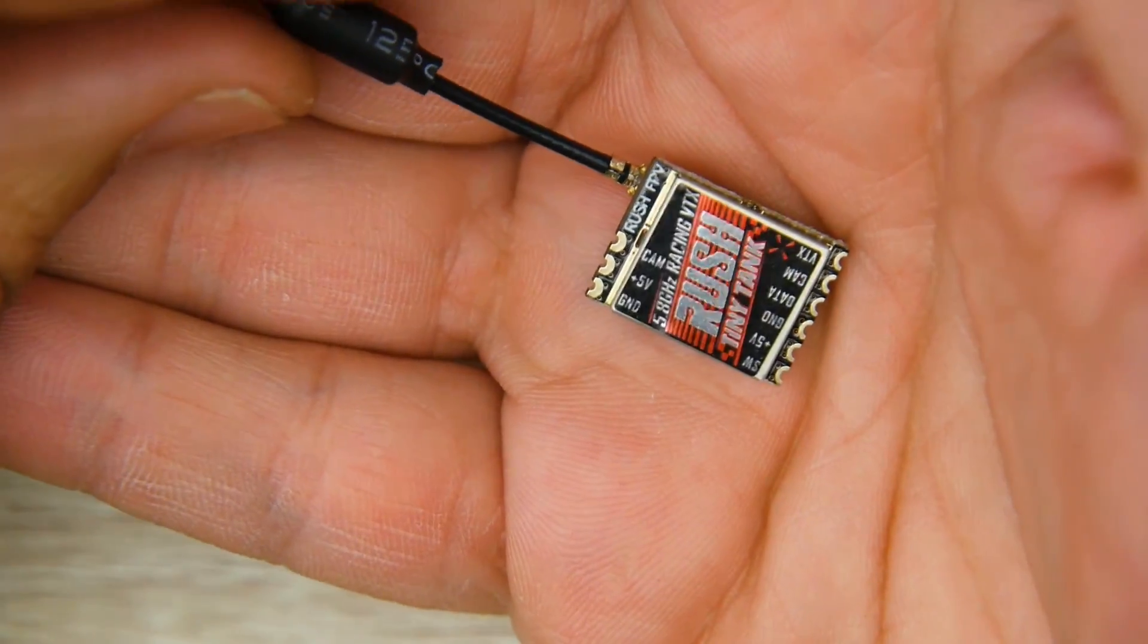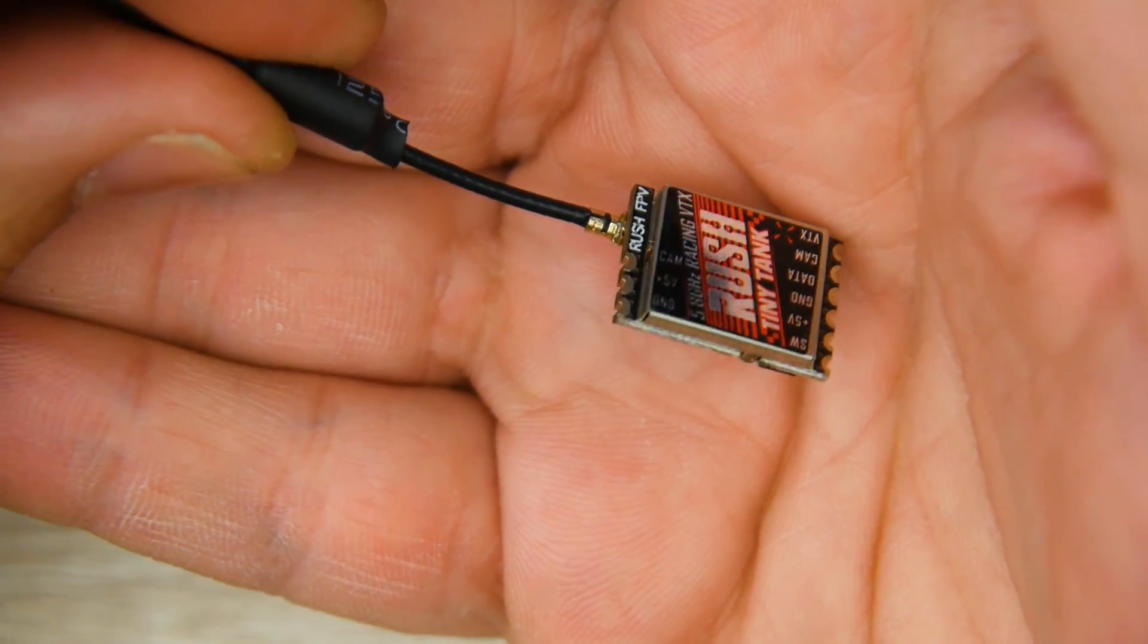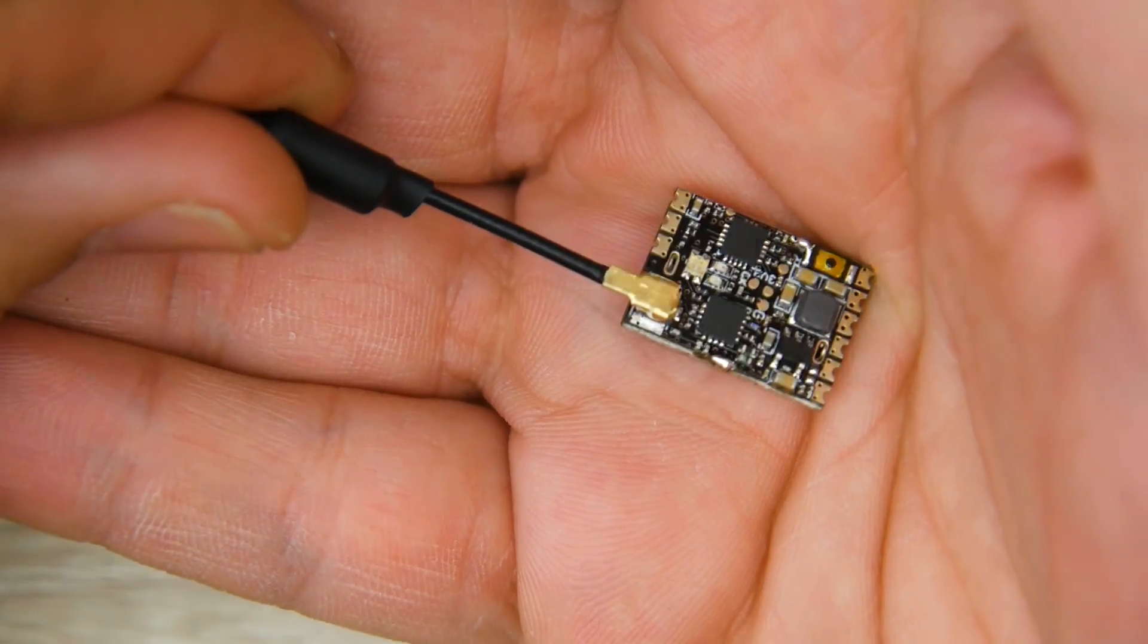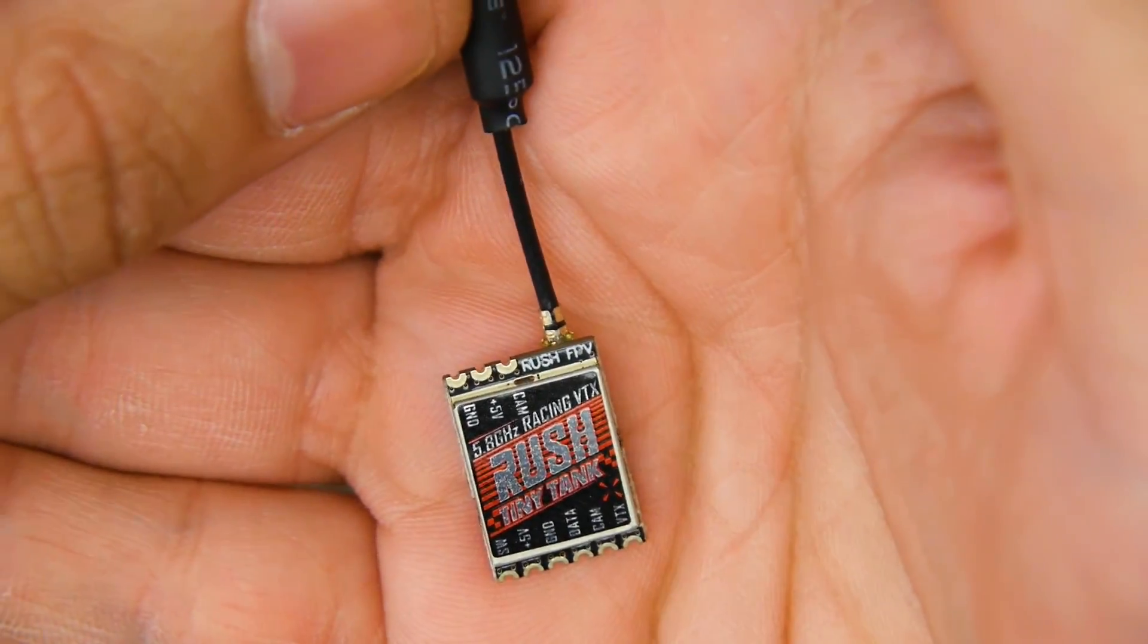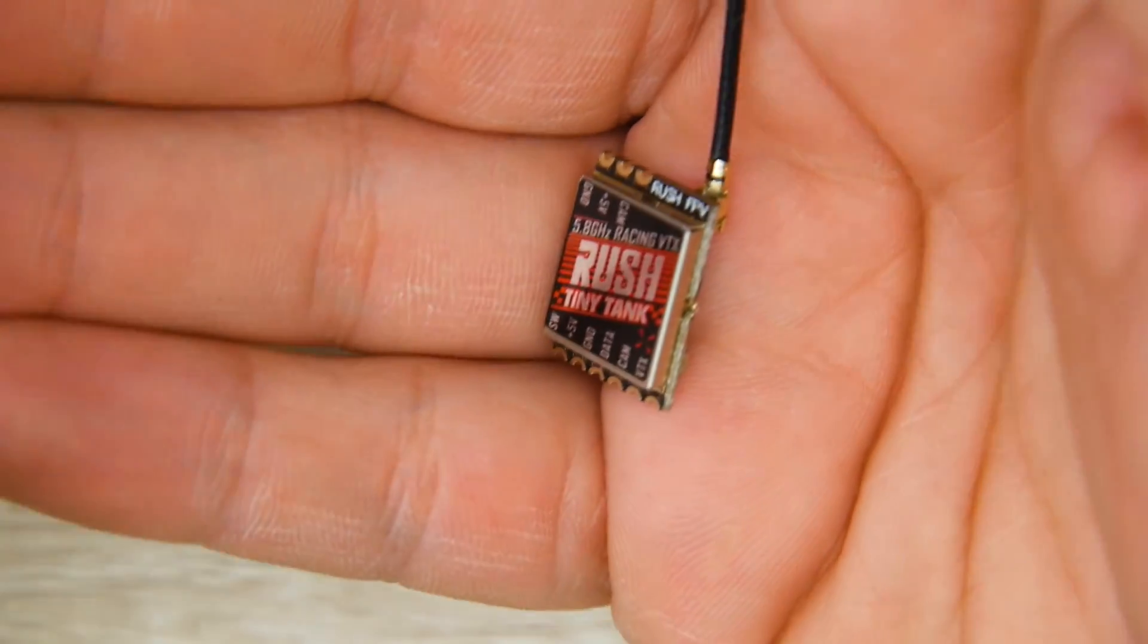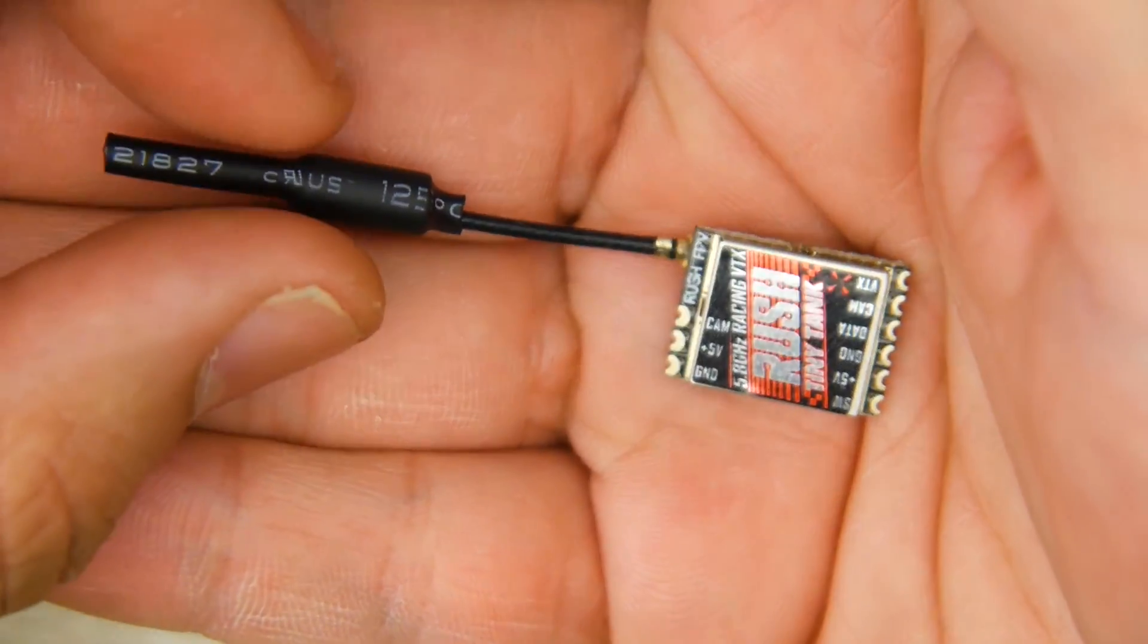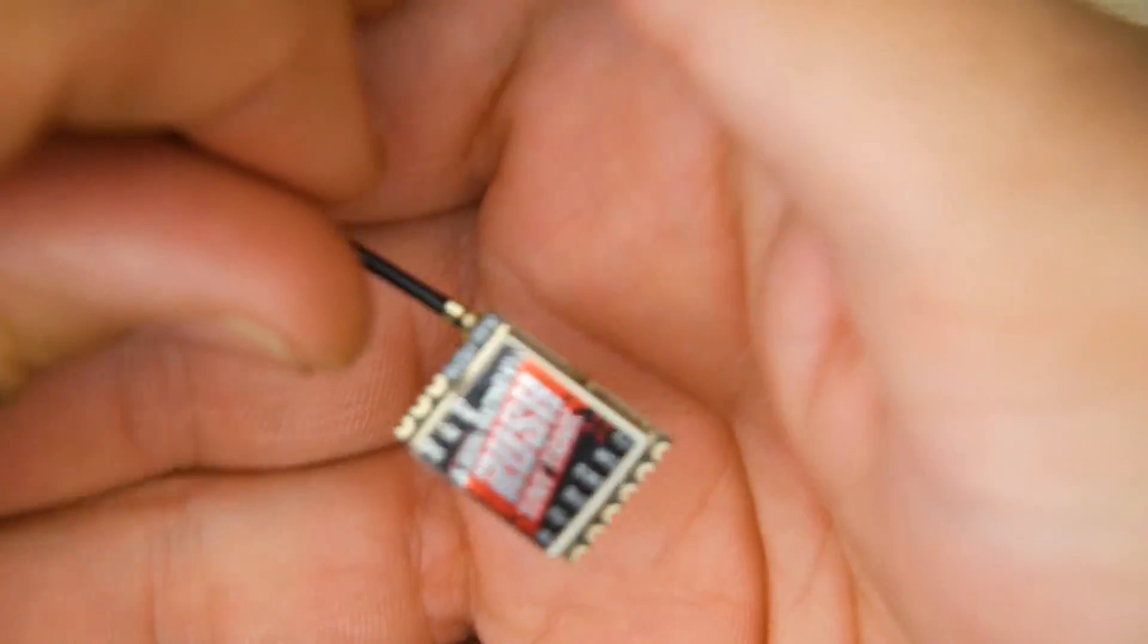Budget video transmitters are anywhere between $15 to $20. And now you're getting a proper, super tiny, super legit video transmitter for $20. It's just crazy. I think what's going on here is that the 5.8 gigahertz and also the analog camera manufacturers are getting worried from the DJI stuff.